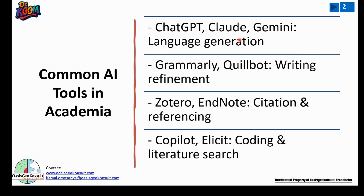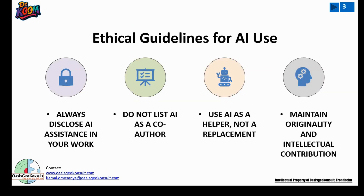So what are the principal ethical guidelines for AI use? Number one: you must always disclose AI assistance in your work. If you use AI to refine text, you must say it. If you used AI to draw your models, you must say it. You must acknowledge it and disclose it.